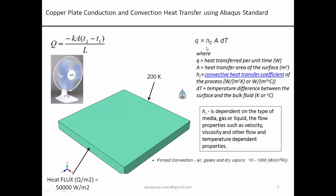The convective heat transfer coefficient h has units of watts per meter-squared Kelvin. It depends on the media type — gas or liquid — and flow properties like velocity. For high-velocity air flowing over the plate, h is on the higher side and heat transfer to the air is faster. For air specifically, h is in the range of 10 to 10,000 depending on velocity and viscosity.